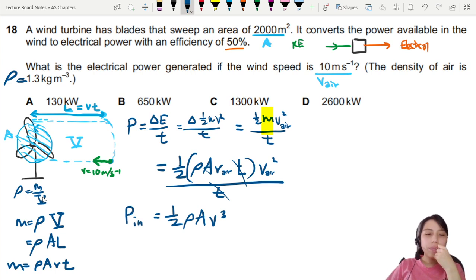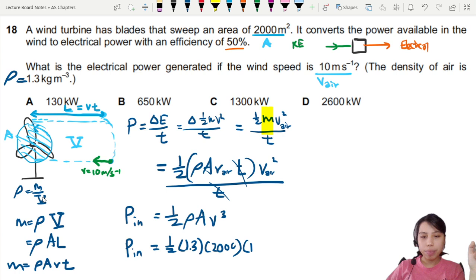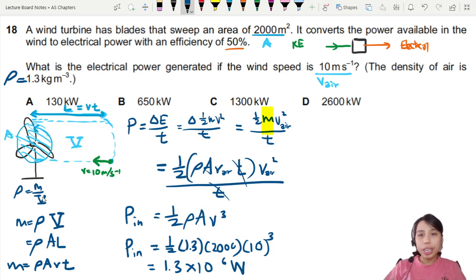So we will plug in the equation. We have enough information. This will be the input power, which is the kinetic energy that goes into the machine of the engine of the turbine. That is half times 1.3 times 2,000 times 10 cubed. Calculator time. We'll get 1.3 times 10 to the 6 watts rate of change of kinetic.